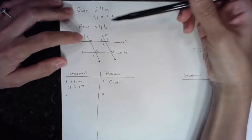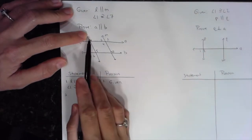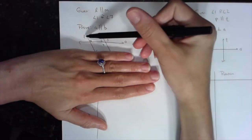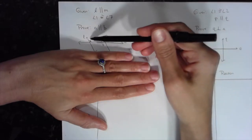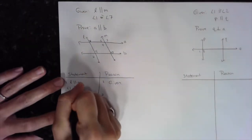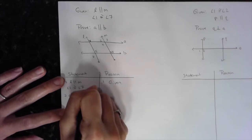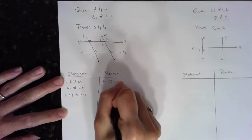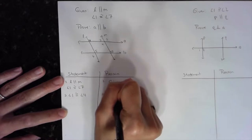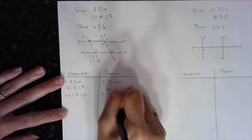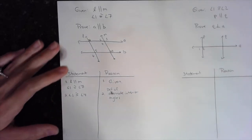Since L and M are parallel and A is my transversal through them, angles one and four are alternate interior angles. If they're alternate interior angles, they're congruent. So my next step is: angle one is congruent to angle four, and my reason is the definition of alternate interior angles — because L is parallel to M.